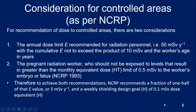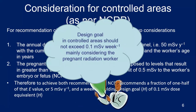What are the considerations for controlled areas as per NCRP? There are two considerations for dose recommendations. One is the annual dose limit E for radiation personnel: 50 mSv per year, with cumulative dose not to exceed the product of 10 mSv and the worker's age in years. The second consideration is the pregnant radiation worker, who should not be exposed to levels resulting in a monthly equivalent dose greater than 0.5 mSv to the embryo or fetus. To achieve both, NCRP recommends a shielding design goal of 5 mSv per year, or 0.1 mSv per week, for controlled areas.